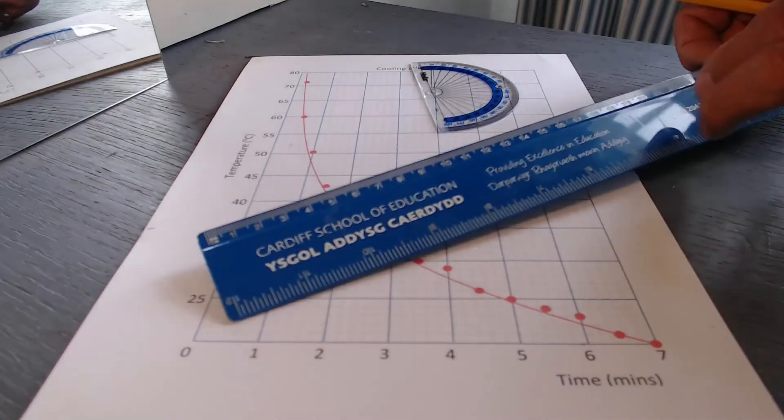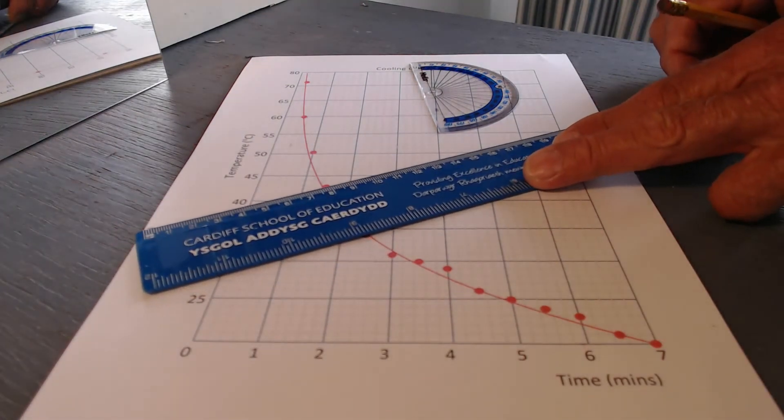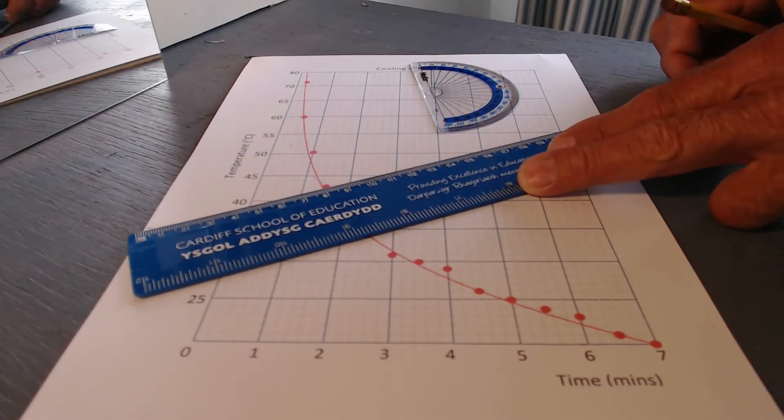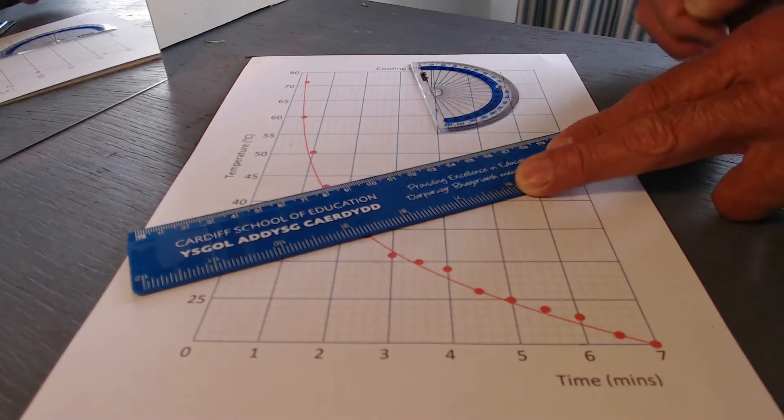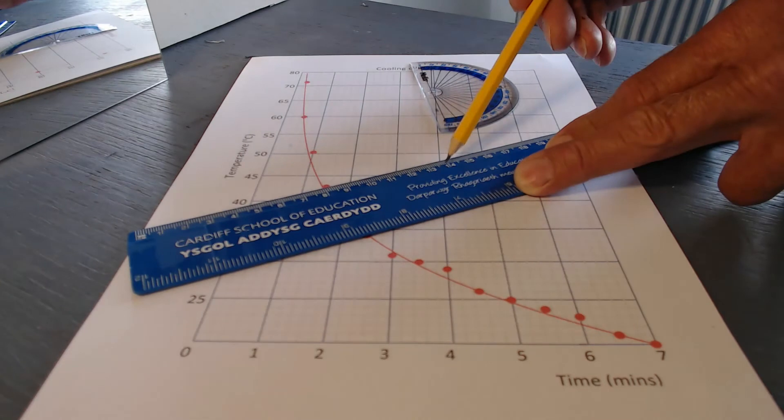And using the ruler, I'm going to mark this line. The line I'm marking is a line that will be at right angles to the curve at this point. So there it is.